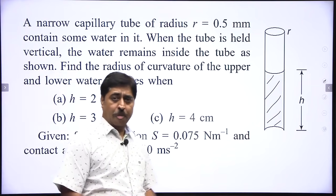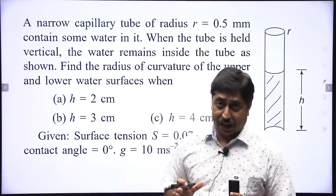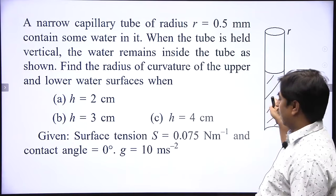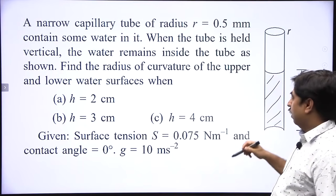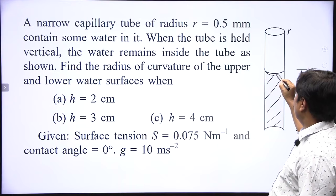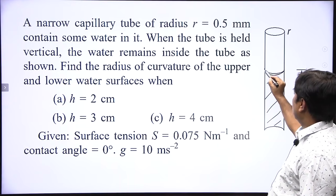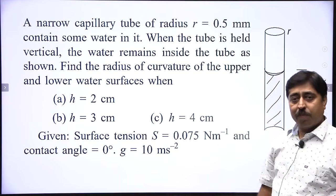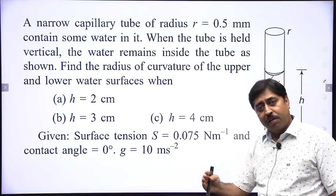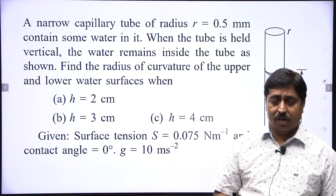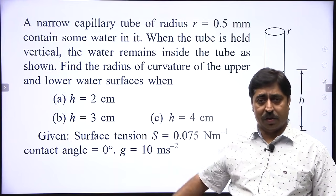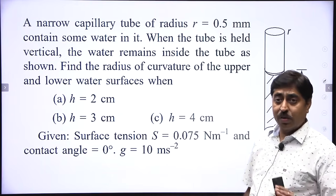The first and foremost thing — the understanding of contact angle is very important. Here, as you can see in the diagram, the upper surface is in touch with the tube and the tube extends well above that upper surface. In this particular case, the tangent to the liquid surface and the tangent to the solid surface are in the same direction, which means the contact angle is 0 degrees.